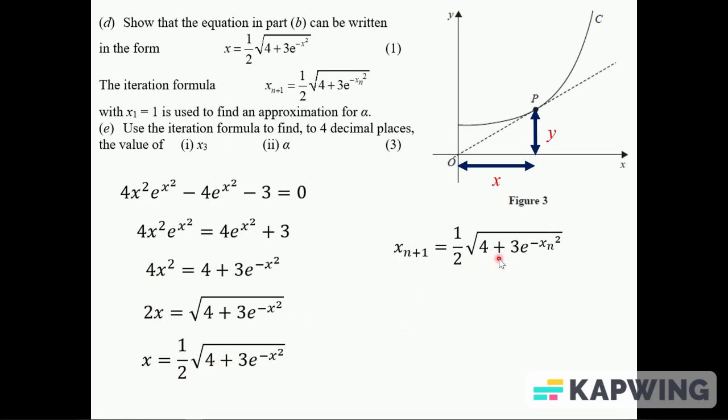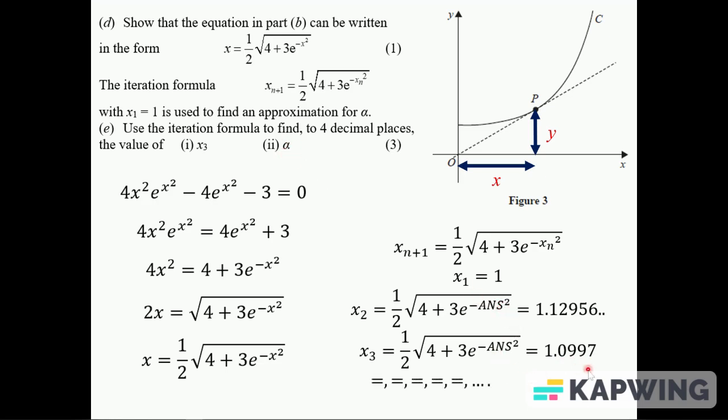You put this into an iteration form. So there's the value we put in, and that's the value we get out. Find x3 using x1 equals 1. I'll put 1 in the calculator. Type in a half the square root of 4 plus 3 e to the minus answer squared. And you should get 1.129 for that. Then you can press equals again to get x3, and that's 1.0997 to 4 decimal places. And then we want an accurate value for alpha. Just press equals those times until the answer stops changing. And you should get 1.1051.